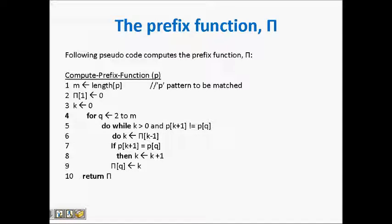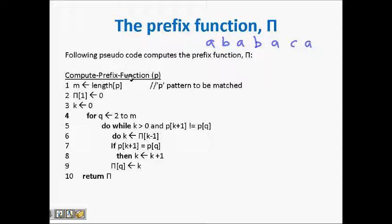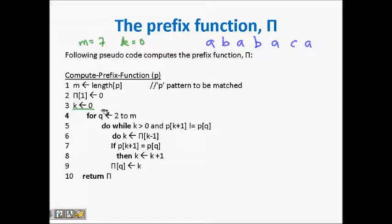Let's see this beautiful algorithm. So 'a b a b a c a' — this is your pattern. What it does is compute the prefix function π. Here, m is the length of the pattern, so m is seven. k is zero — k is basically the length of the longest prefix that has been found. We run: π[1] will always be zero because you cannot take a suffix of the same length as the pattern. So π[1] is zero, k is zero, and q starts from two to m.